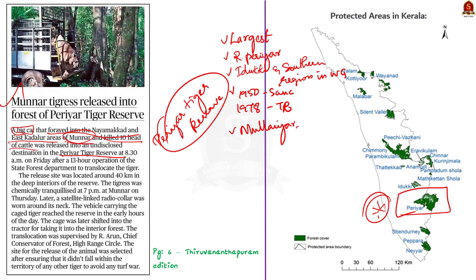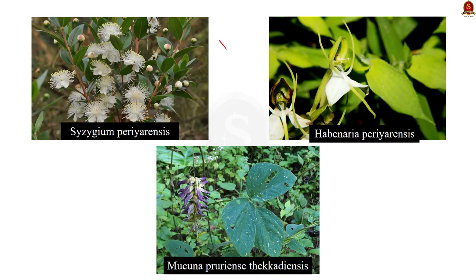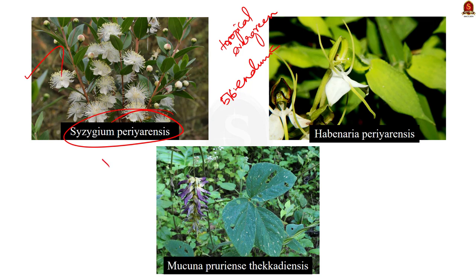The major rivers flowing through the reserve are Mullayar and Periyar. The sanctuary comprises tropical evergreen, semi-evergreen, moist deciduous forest, and grasslands. About 1966 species of flowering plants grow in the sanctuary, of which about 516 are endemic to the Western Ghats. The sanctuary is also a repository of about 300 medicinal plants. Some endemic species include Syzygium periyarensis (a tree), Habenaria periyarensis (an orchid), and Mucuna pruriens var. tecadiensis (a climber).